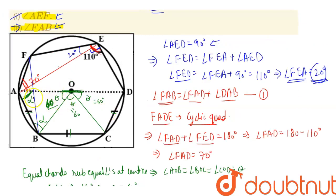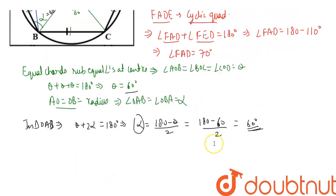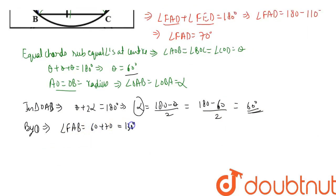We now have all the values needed. Using result one, angle FAB = angle FAD + angle DAB = 70 + 60 = 130 degrees. So the measure of angle FAB is 130 degrees.